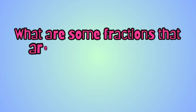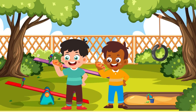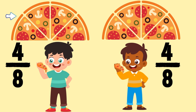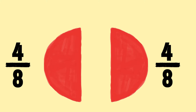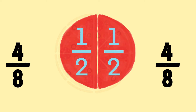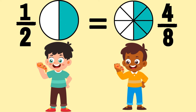Now let's continue. We are going to find fractions that are equal to 1 half. These two friends want to share a pizza. Each of them are going to get 1 half of the pizza. But when we look at the pizzas, we notice that they are cut into 4 equal slices. So each half of the pizza is cut into 4 equal slices. Then we notice that these 4 equal slices make up half of the pizza. 1 half of the pizza is the same as 4 eighths of the pizza. They are equivalent fractions! 1 half is equivalent to 4 eighths because they take up the same amount of the pizza.